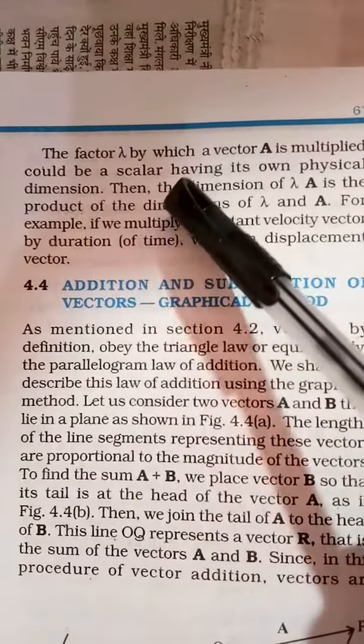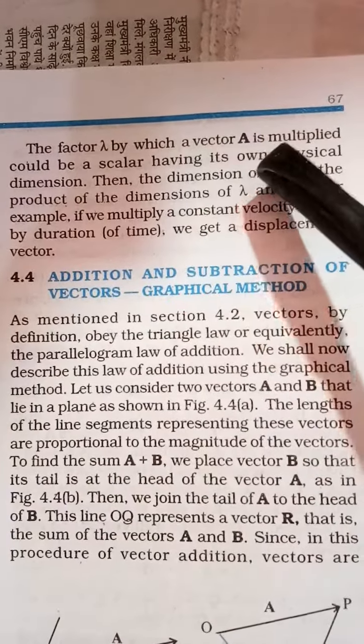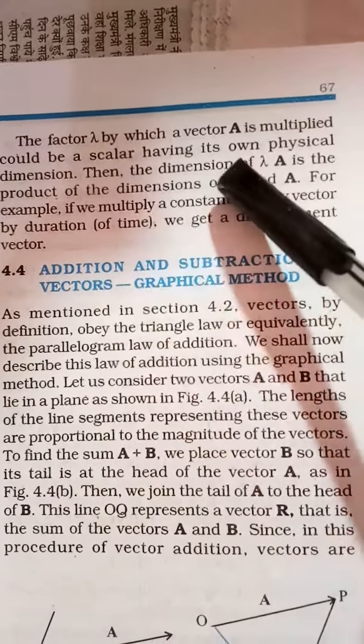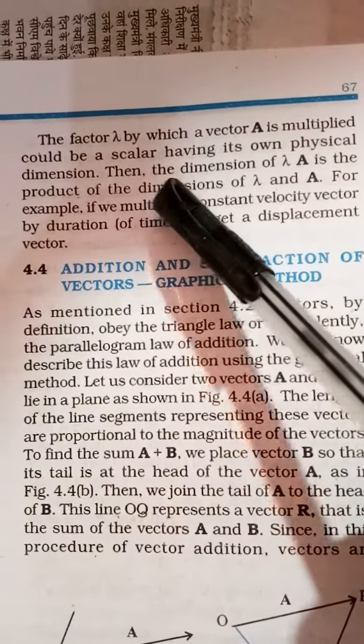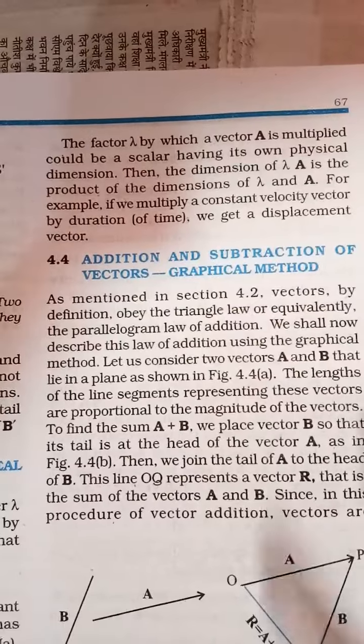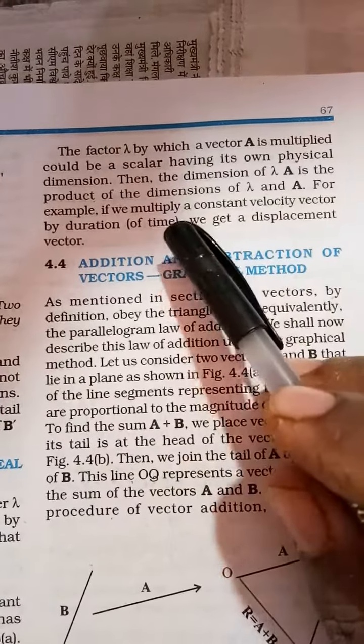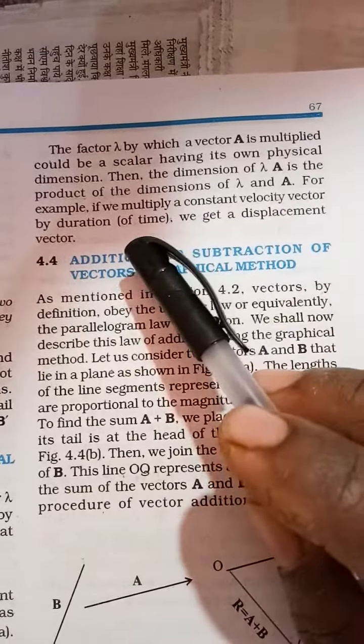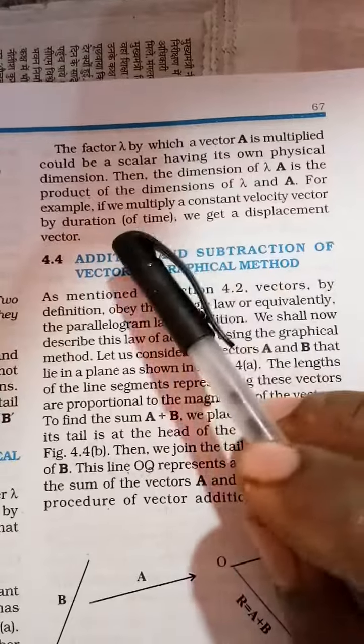The factor lambda by which a vector A is multiplied could be a scalar having its own physical dimension. Then the dimension of lambda·A is the product of the dimensions of lambda and A. For example, we multiply the constant velocity vector by the duration of time, we get a displacement vector. This figure will provide you the answer for multiplying vectors by real numbers.